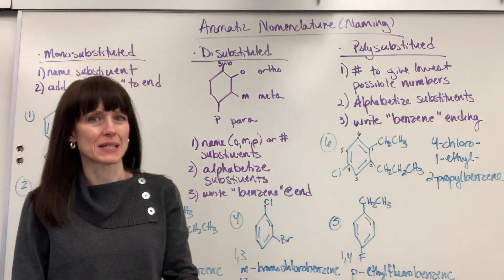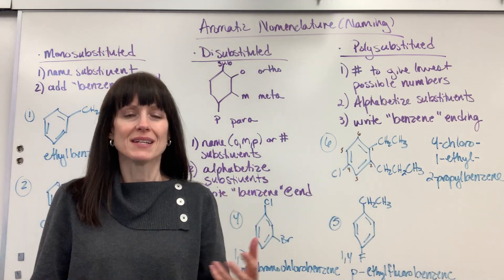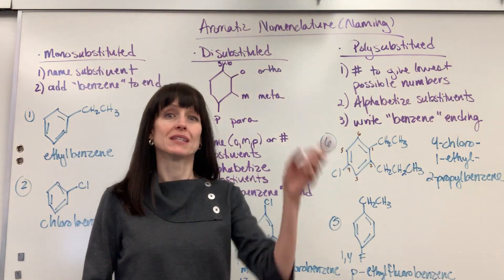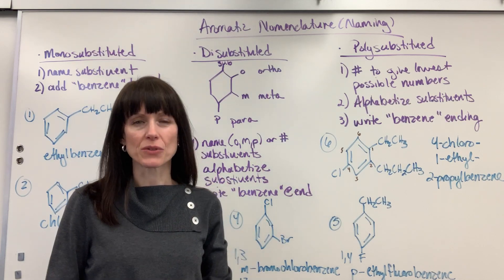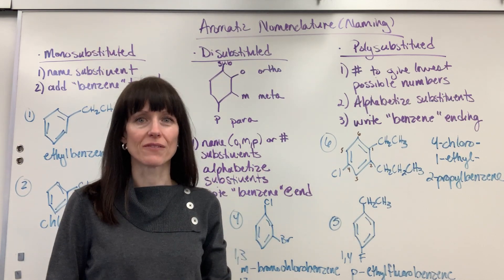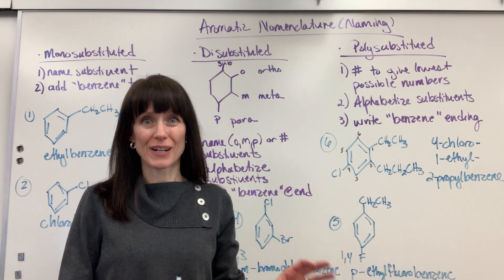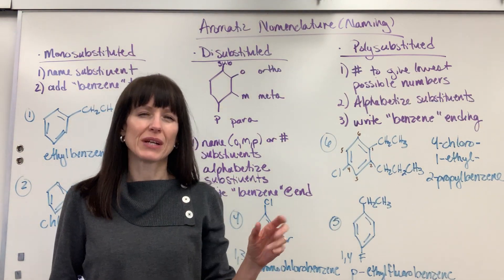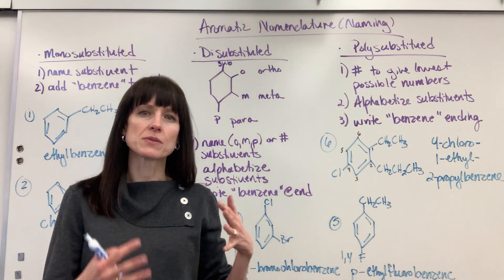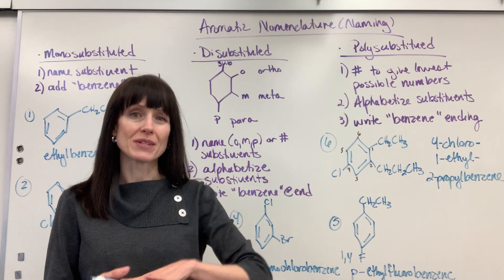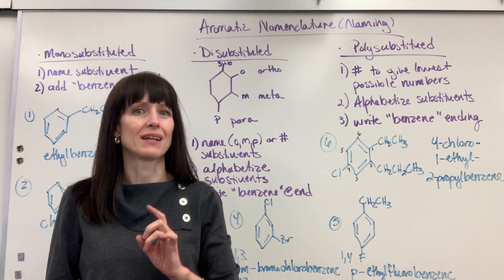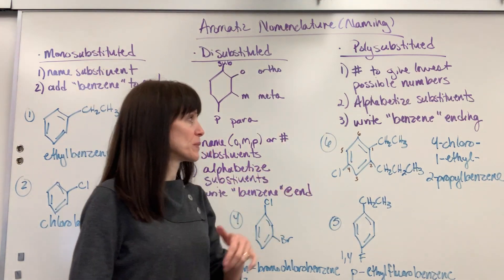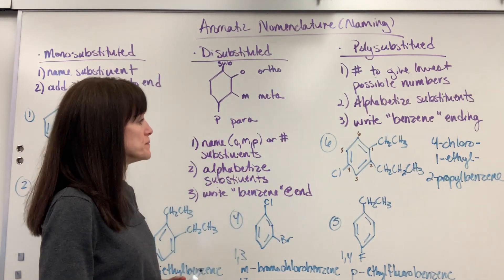Now, if we have polysubstituted — so you have three or more substituents — here are your rules. First, you're going to number those six carbons to give the lowest possible numbers to all the substituents. Second, you alphabetize the substituents, so you'll notice the numbers won't always go lowest to highest when you write it because you're writing it alphabetically. And then lastly, you just put the word benzene at the end.